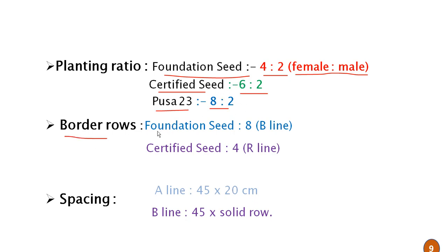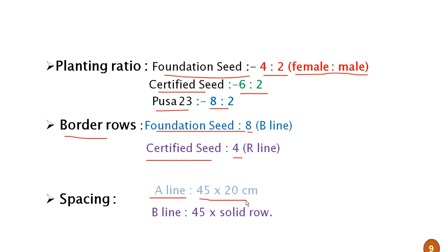Border rows: in case of foundation seed, 8 border rows are required and in case of certified seed, 4 border rows are required. Spacing of the A line is 45 × 20 cm and the B line is 45 cm with solid row sowing.